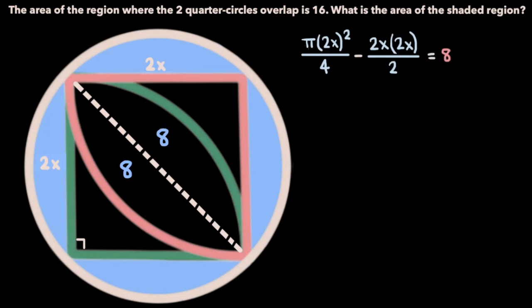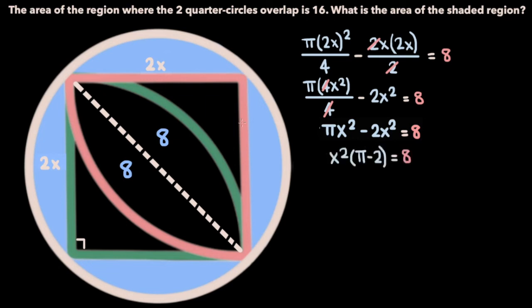Now let's start simplifying the left-hand side. We have π times (2x)² which is 4x² over 4, minus, and then if we cancel out a 2 from the numerator and denominator of this second term, we have x times 2x, so 2x². And once again, that expression is equal to 8. Now let's cancel out a factor of 4 from the numerator and denominator of this first term, and we're left with πx² - 2x² = 8. And finally, let's factor out an x² from both terms on the left-hand side, and we get x²(π - 2) = 8.